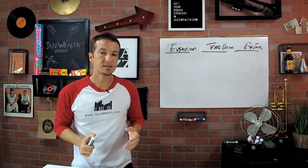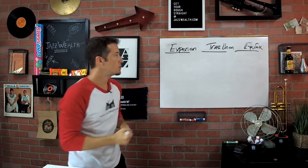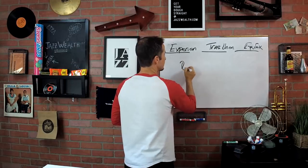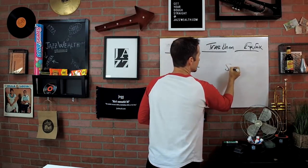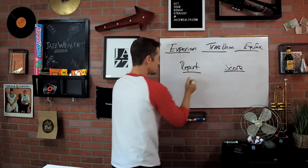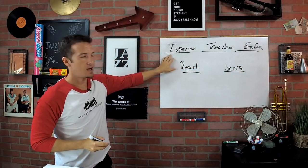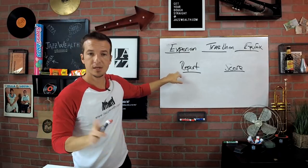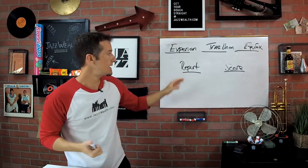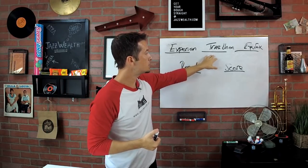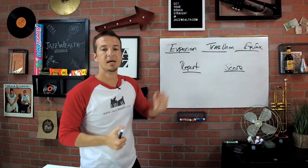You got three credit reporting agencies. Now what happens is there are two parts to your credit. You have your credit report, which each one of these guys holds, and then you have your credit score.